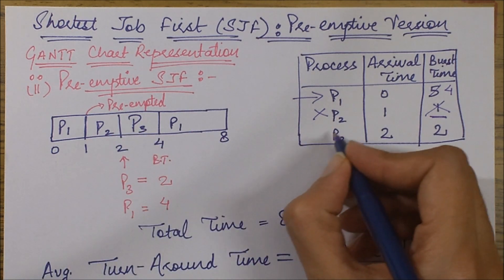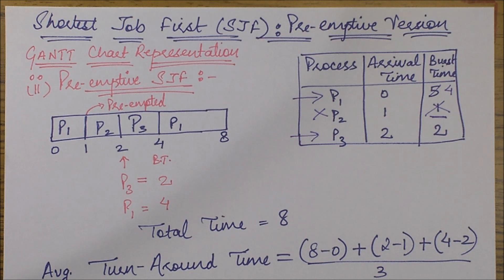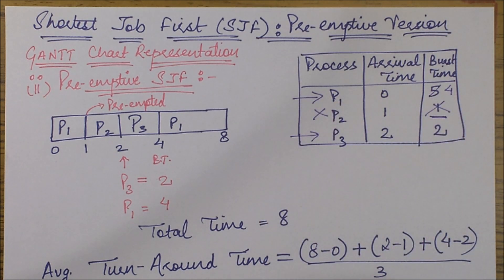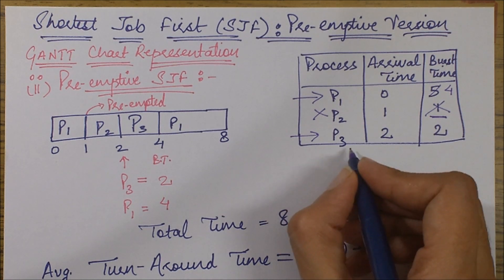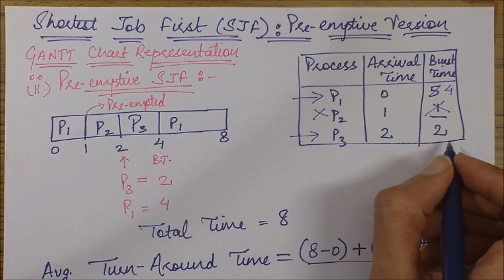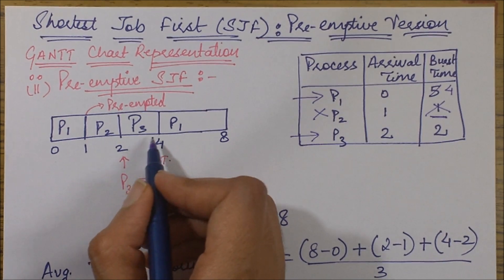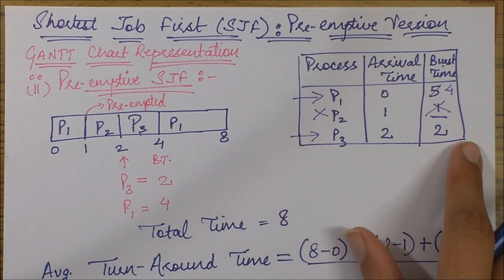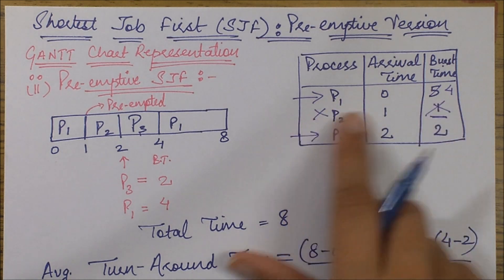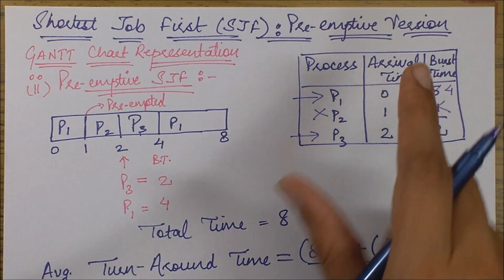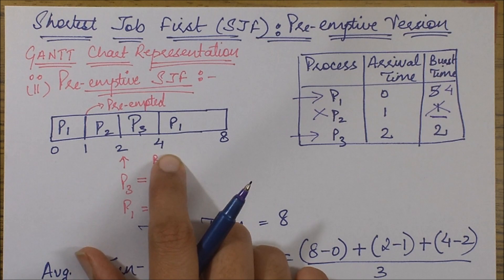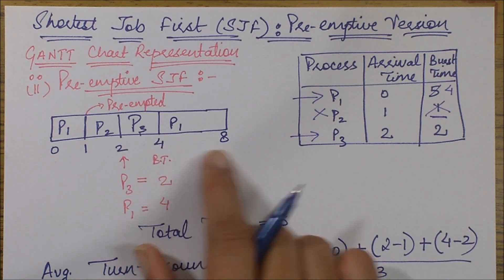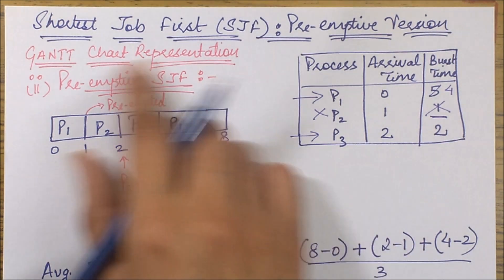At time instant two we need to make a decision between P1 and P3. P3 has two time units to be executed and P1 has four time units left. P3 has a smaller interval, so we start with P3. After one time instant P3 will have one unit left, and P1 remains the same since it is not executing. Once P3 completes after two seconds — at time instant four — P1 executes its remaining four seconds and completes at time instant eight. That's the complete Gantt chart.